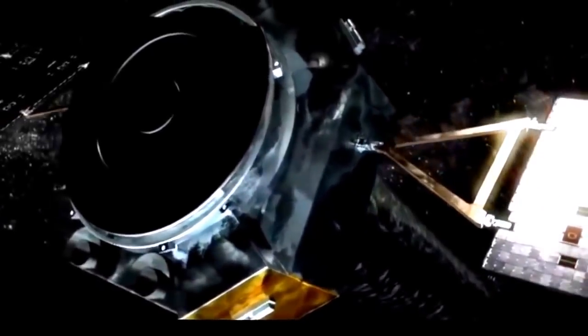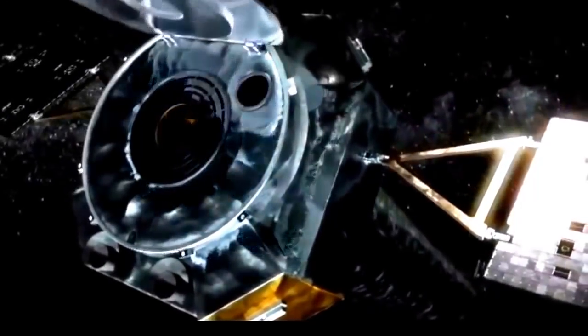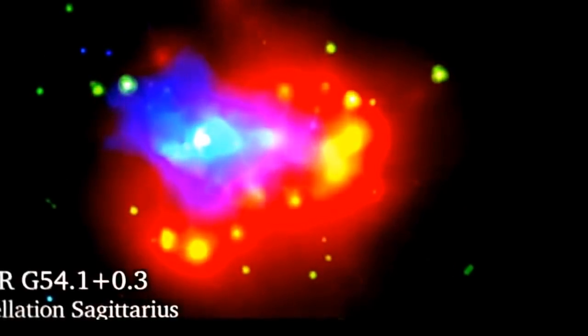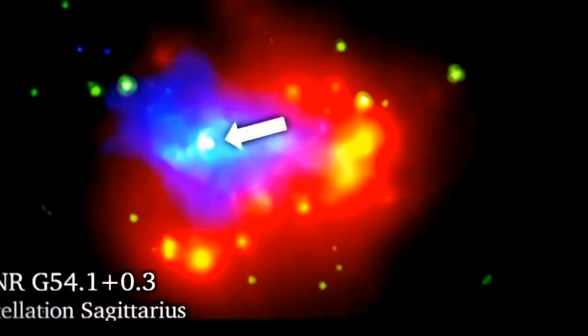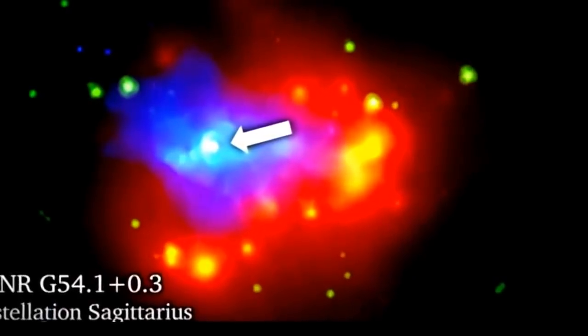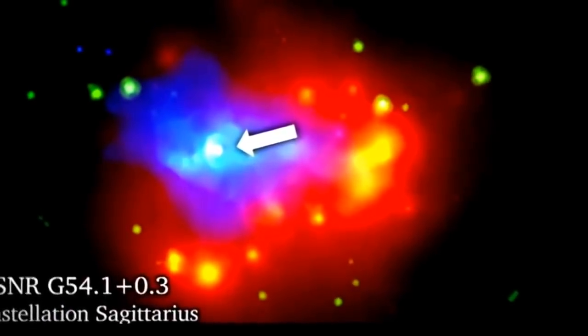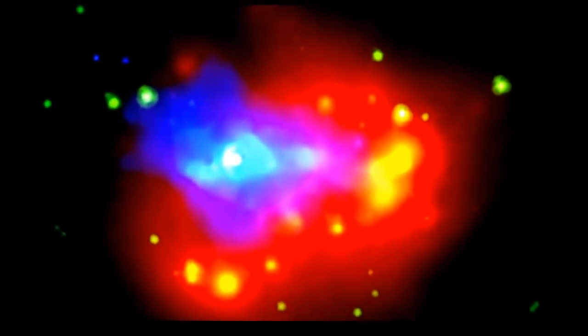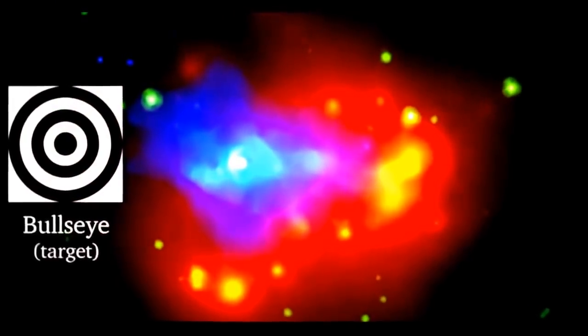Next, we'll use Chandra to search for a pulsar. This nebula lies in the constellation Sagittarius. A pulsar in its midst flashes with exceptional luminosity. Ringed by gases, it's understandably called the bullseye pulsar.